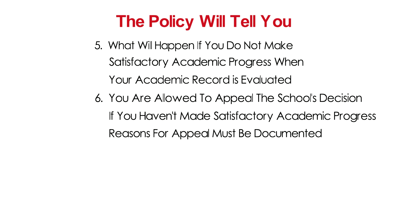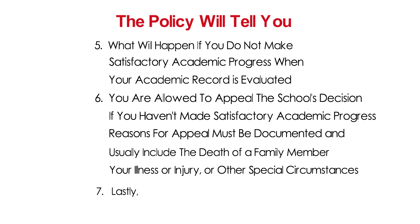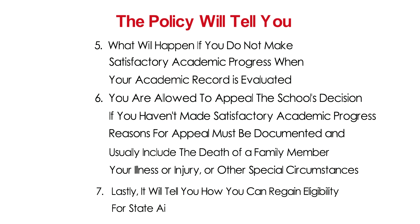Reasons for appeal must be documented and usually include the death of a family member, your illness or injury, or other special circumstances. Lastly, the policy will tell you how you can regain eligibility for state aid.